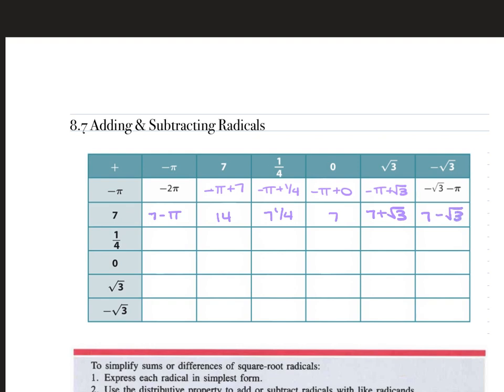For one-fourth: one-fourth minus pi. 7 plus one-fourth is 7 and one-fourth. One-fourth plus one-fourth is two-fourths, which is the same as one-half. One-fourth plus 0 is one-fourth. One-fourth plus the square root of 3. And one-fourth minus the square root of 3 is just one-fourth minus the square root of 3.